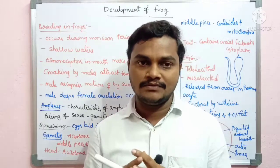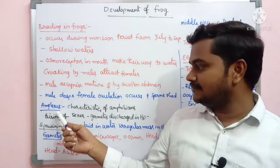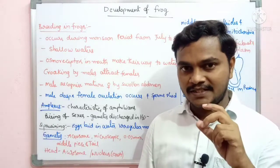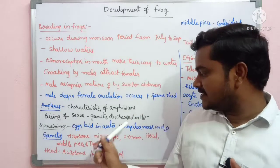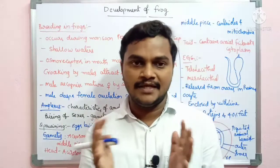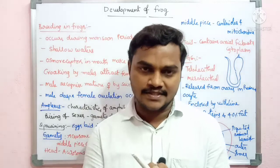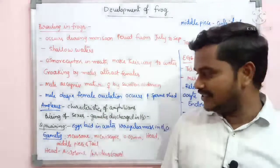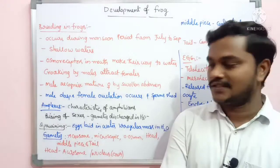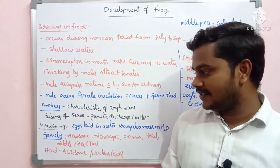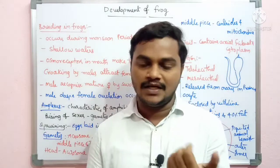The male clasps the female — this process is called amplexus — and ovulation occurs and sperm is shed. This is a characteristic feature of amphibians. Spawning: eggs are laid in water as a group, released out into the water.